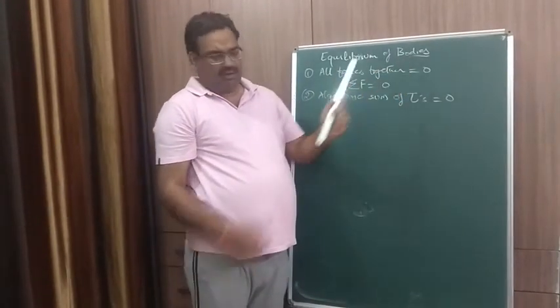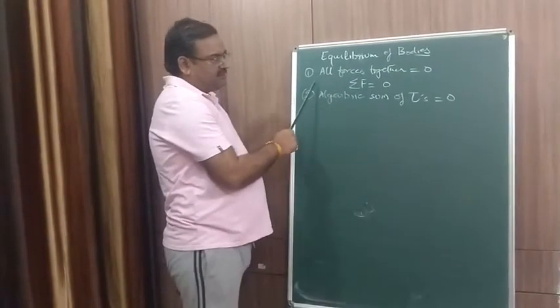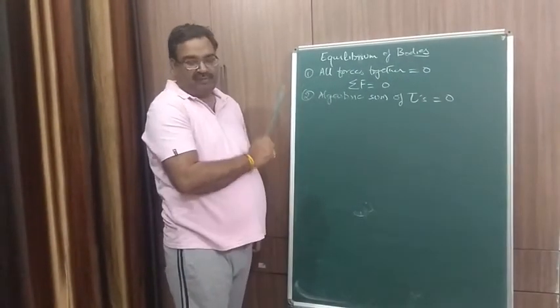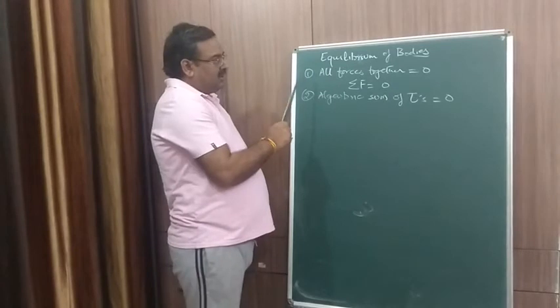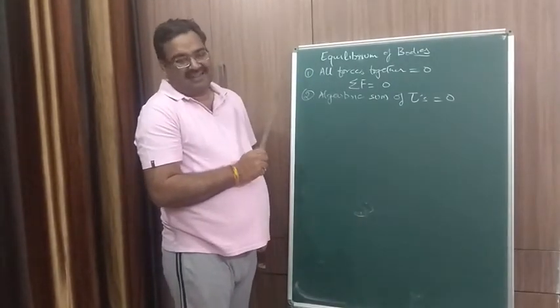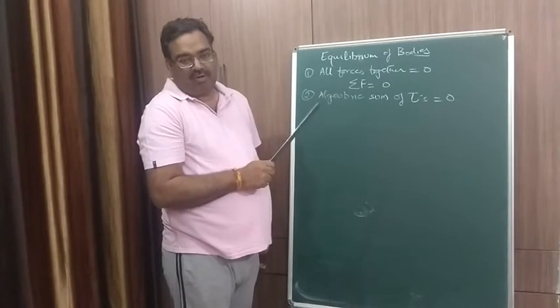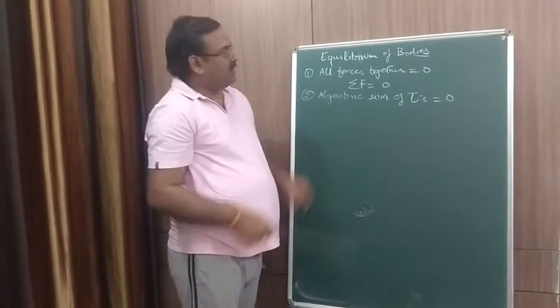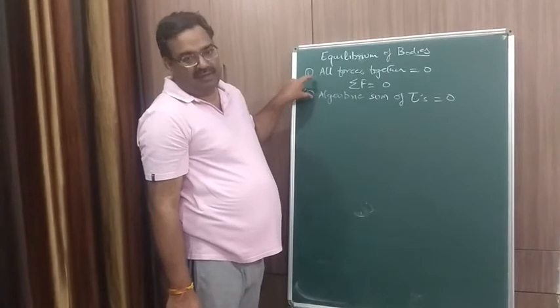That is, sum of clockwise movement should be equal to sum of anticlockwise movement. If these two conditions are fulfilled, then the body is said to be in equilibrium. Is it clear? So these are the two important conditions for a body to be in equilibrium. Whether the body is in state of motion or in the state of rest, that is static equilibrium or dynamic equilibrium, these two conditions should always be.